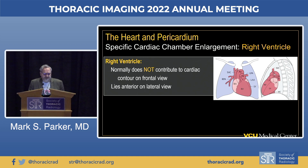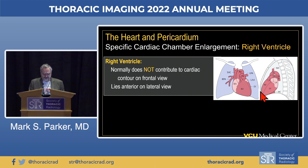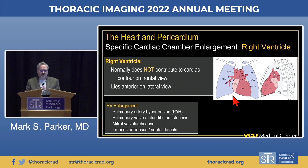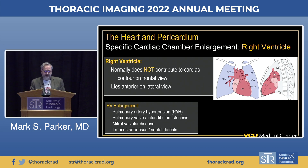Moving to the right ventricle: it does not contribute much to the cardiac silhouette on the frontal radiograph because it lies anteriorly, plastered against the sternum. Causes of RV enlargement include anything that makes it work too hard—pulmonary hypertension, pulmonic valvular and infundibular stenosis, mitral valve disease, truncus arteriosus, and various septal defects.